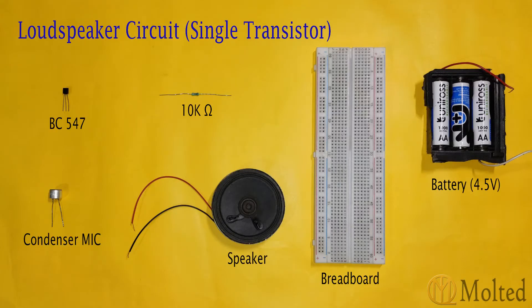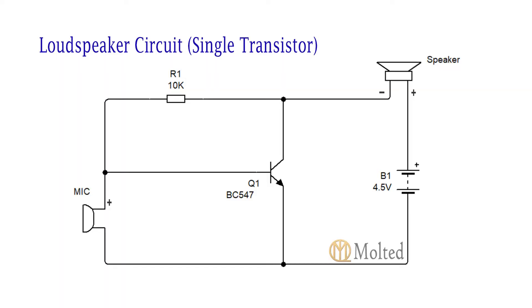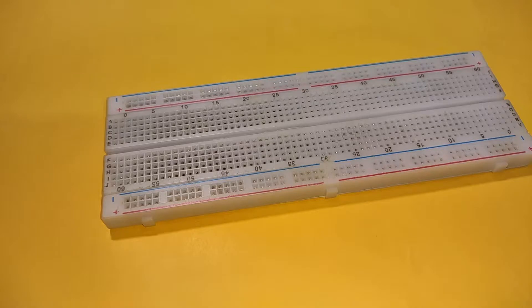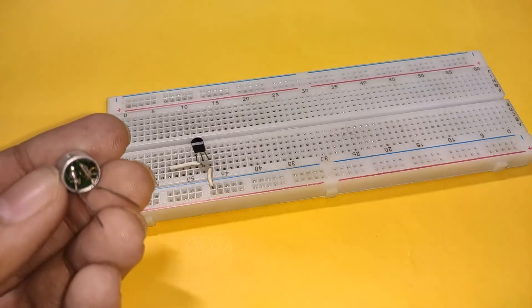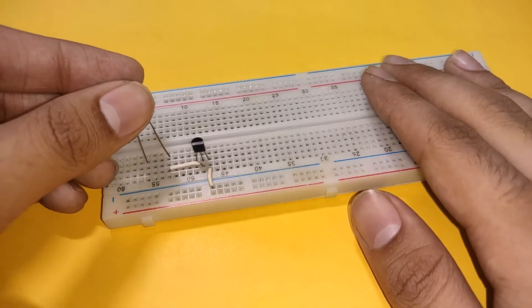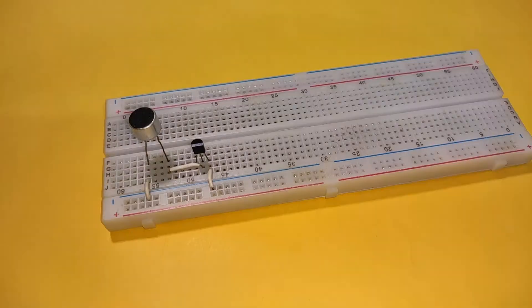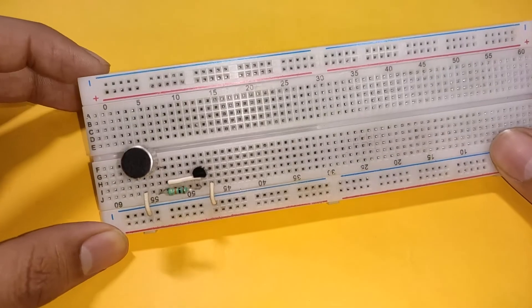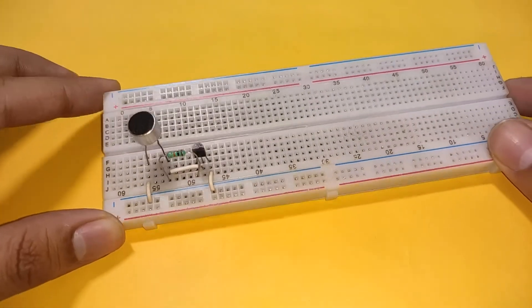These are the components required. And this is the circuit diagram. Place a BC-517 transistor on the breadboard with its emitter connected to the negative rail. Connect the mic with its positive lead connected to the base of the transistor and negative lead to ground. Then place a 10K resistor between the positive lead of the mic and the collector of the transistor.